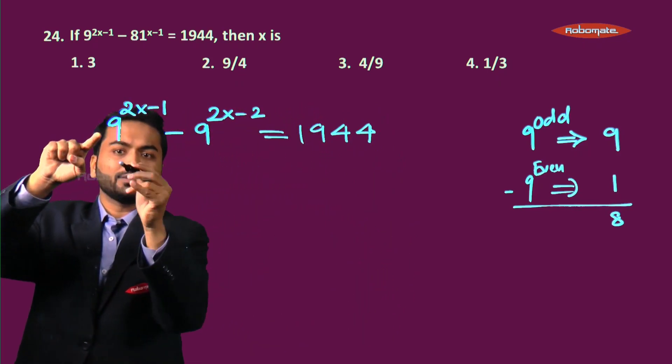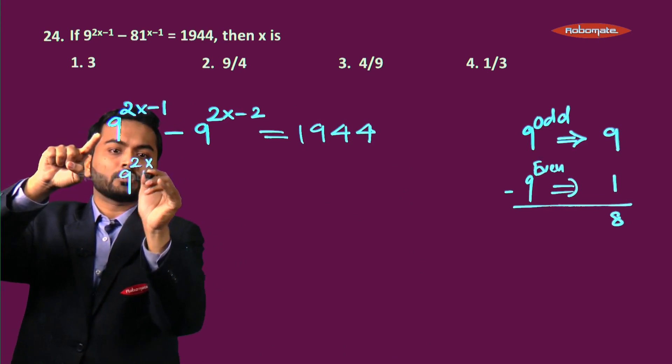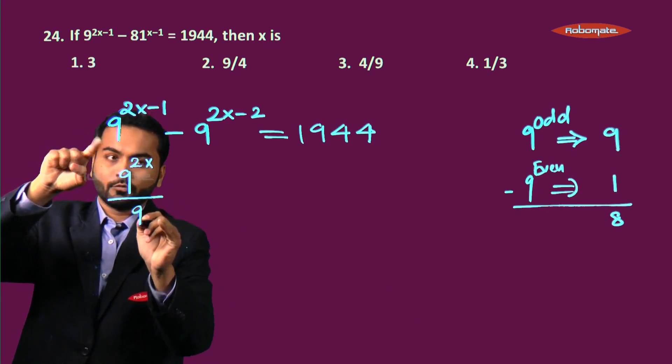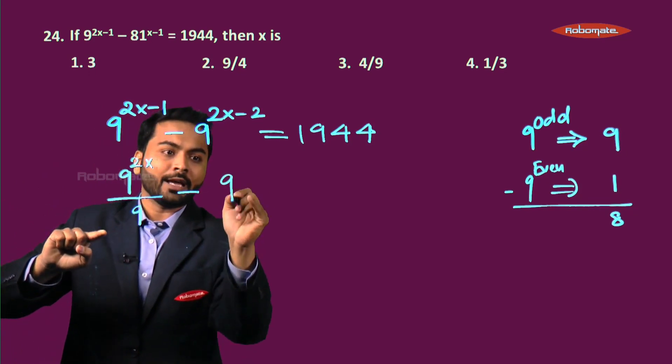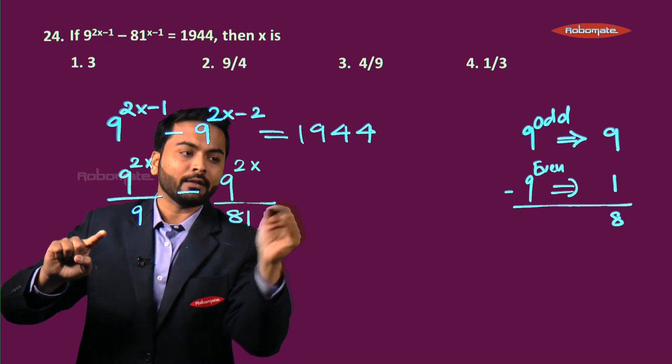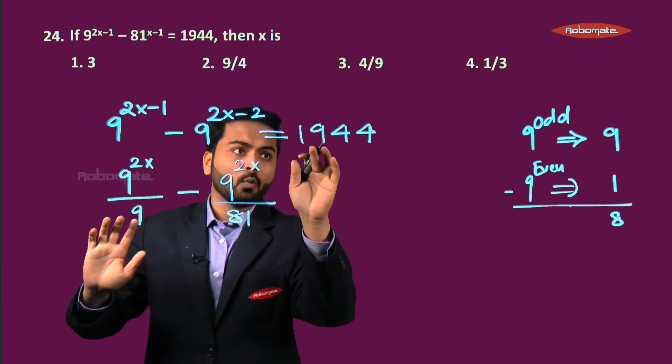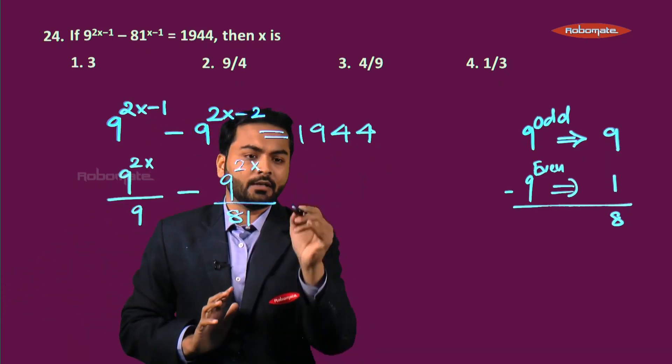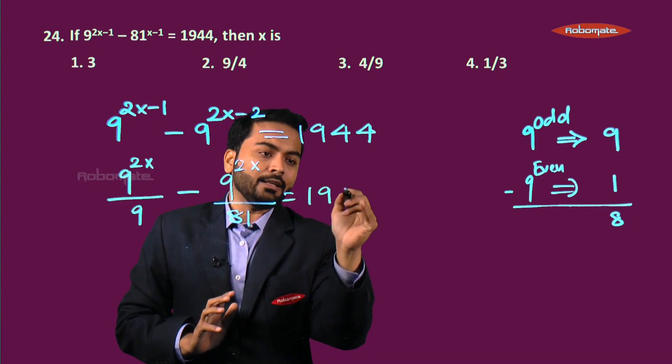So here what I can do is I can write this as 9 raised to 2x upon 9. Similarly, 9 raised to 2x upon 81, is equal to this number, 1944.